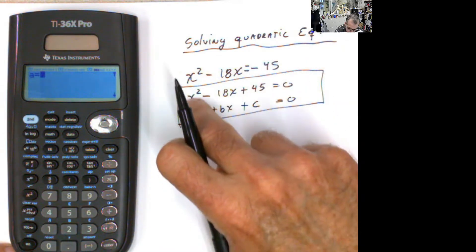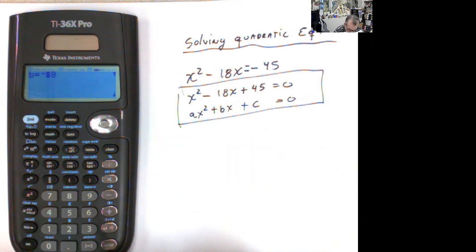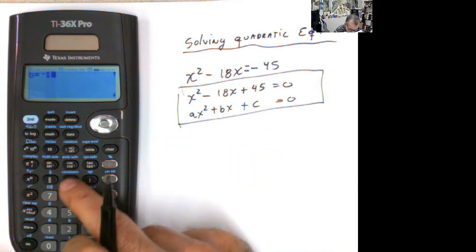So the first coefficient is 1. The second coefficient will be negative. Remember, negative is this one, 18.